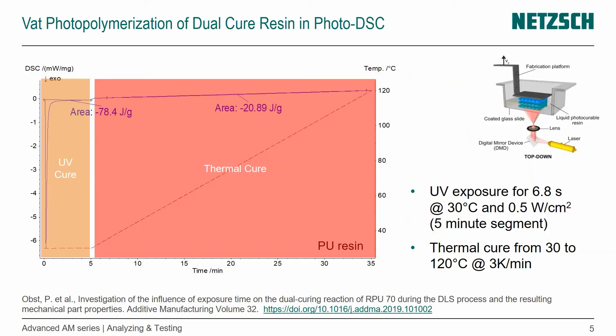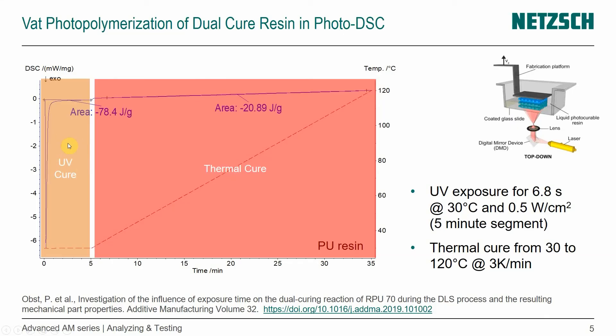So how does something like that look? In this case, I'm showing you the measurement of a dual-cure resin that we measured in this photo DSC, the Phoenix, which would be representative for digital light processing, because it's the dual-cure resin for that process. What we did here — I'm just showing that briefly — we had a UV curing segment and a thermal curing segment afterwards. We used 6.8 seconds UV exposure at 0.5 watts per square centimeter. We waited for the full five minutes, and then we increased the temperature from 30 to 120 degrees C at 3 Kelvin per minute. So UV cure followed by thermal cure for a polyurethane resin.